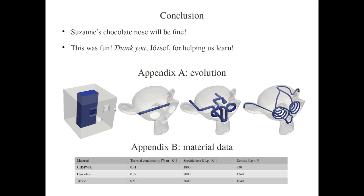Here is the evolution of his tubing system. At first he created just a block head with a very simple tube, then he took the monkey head with a simple tubing, then a more complex tubing, and then the final tubing. Here he also provided the material data which he used for the tubing, for chocolate, and for the tissue of the monkey head.